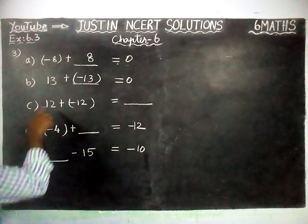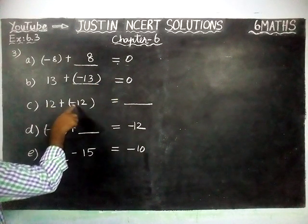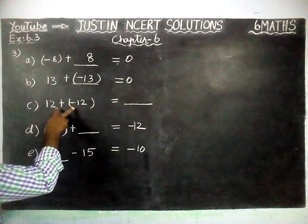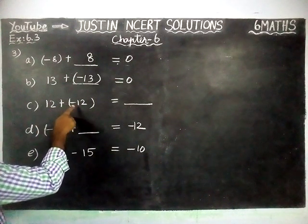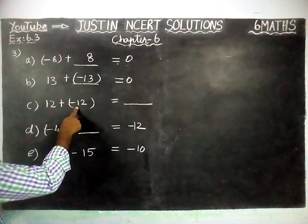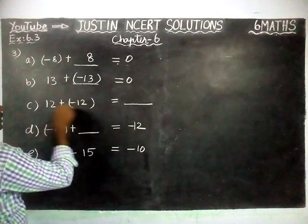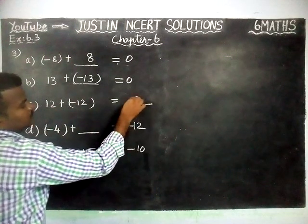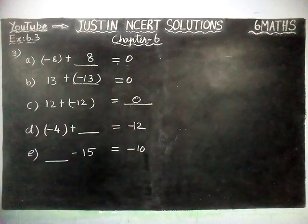Next, already plus 12 plus minus 12. These two are additive inverses. Plus 12 is the additive inverse of minus 12. Now, the difference between these two is 0. So the C question answer is 0.